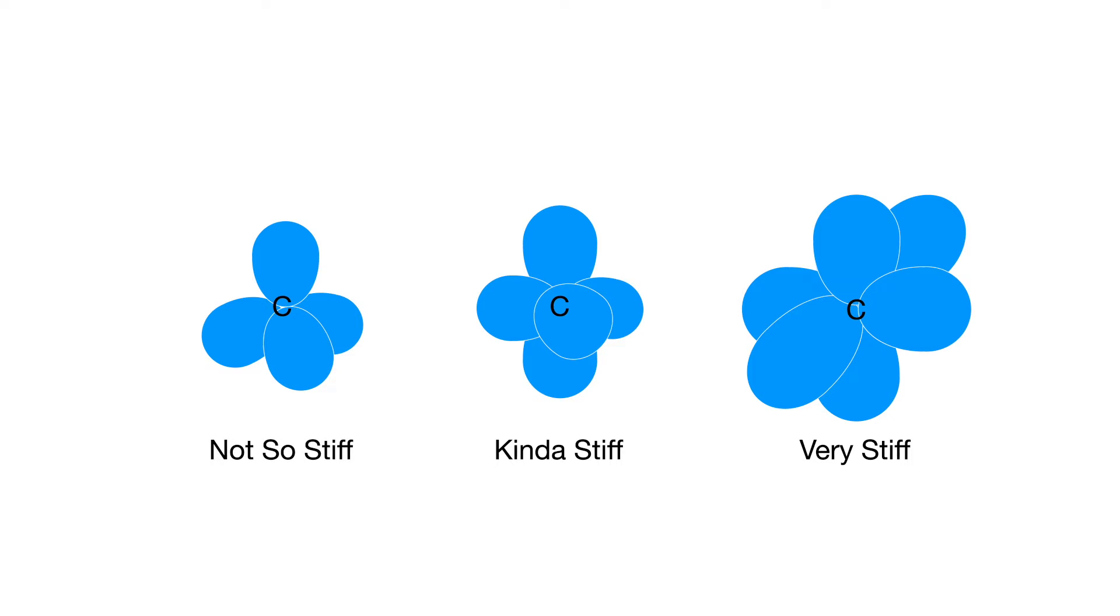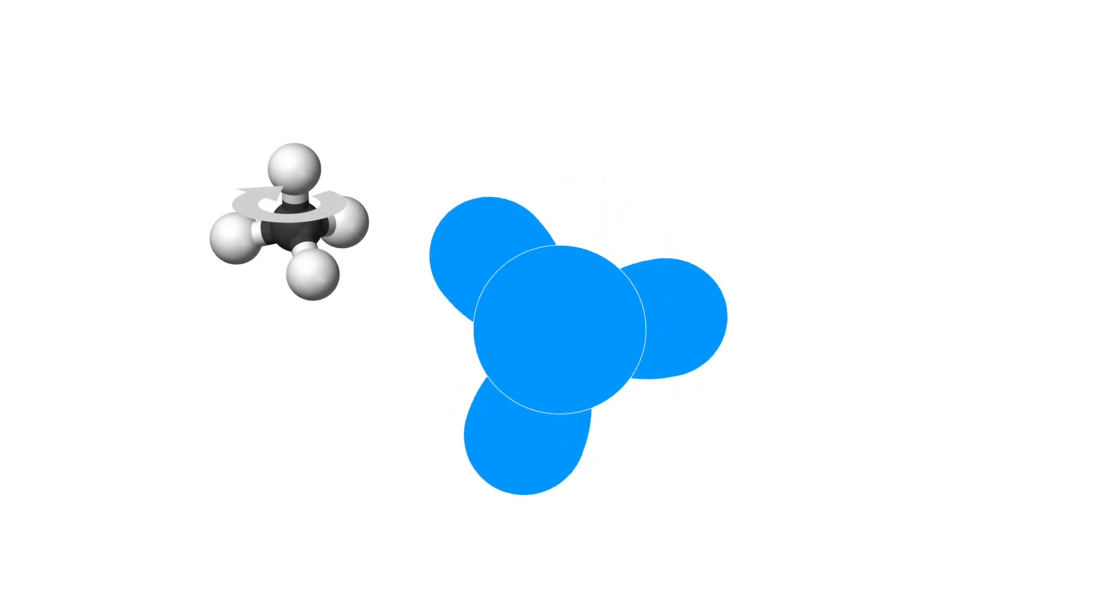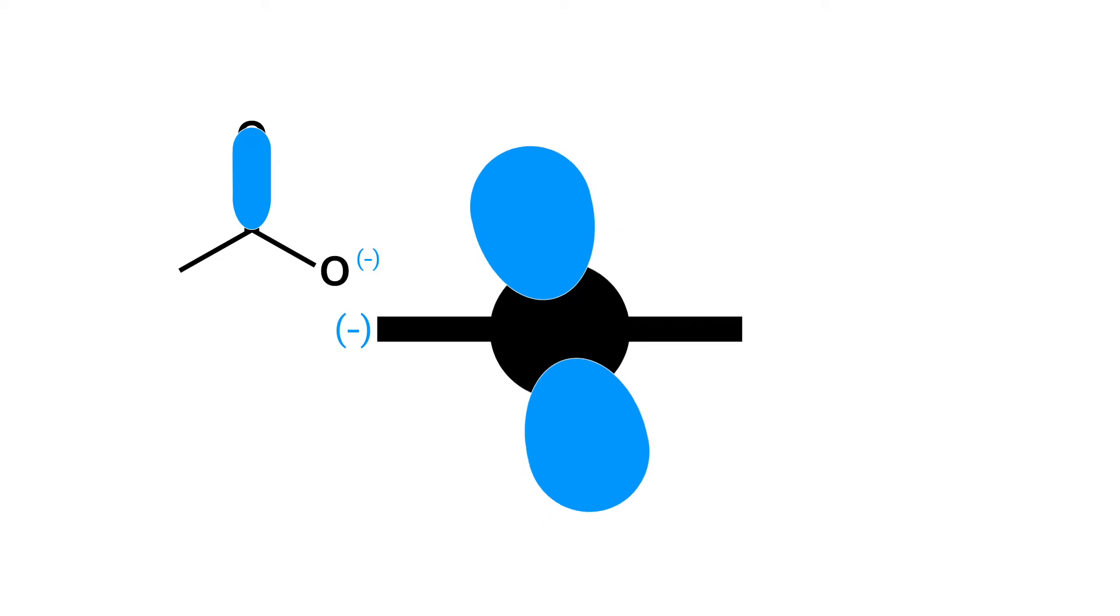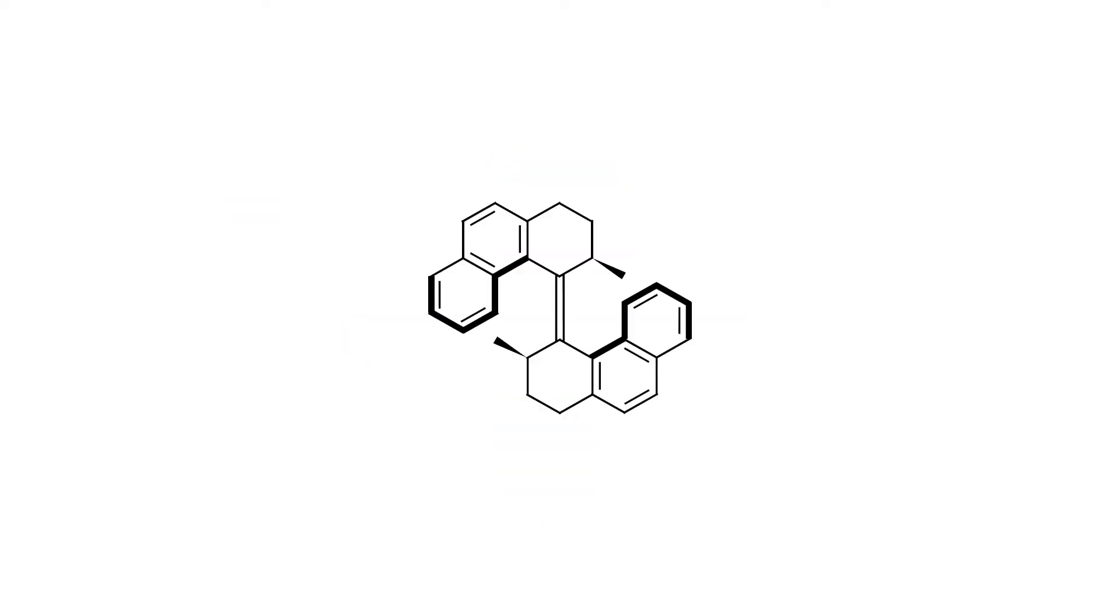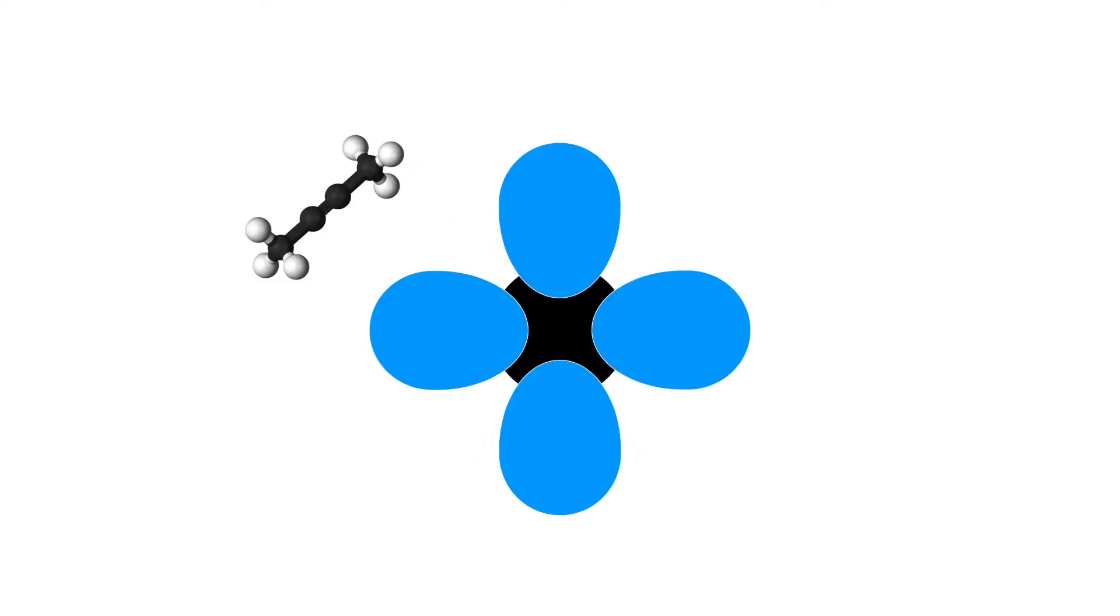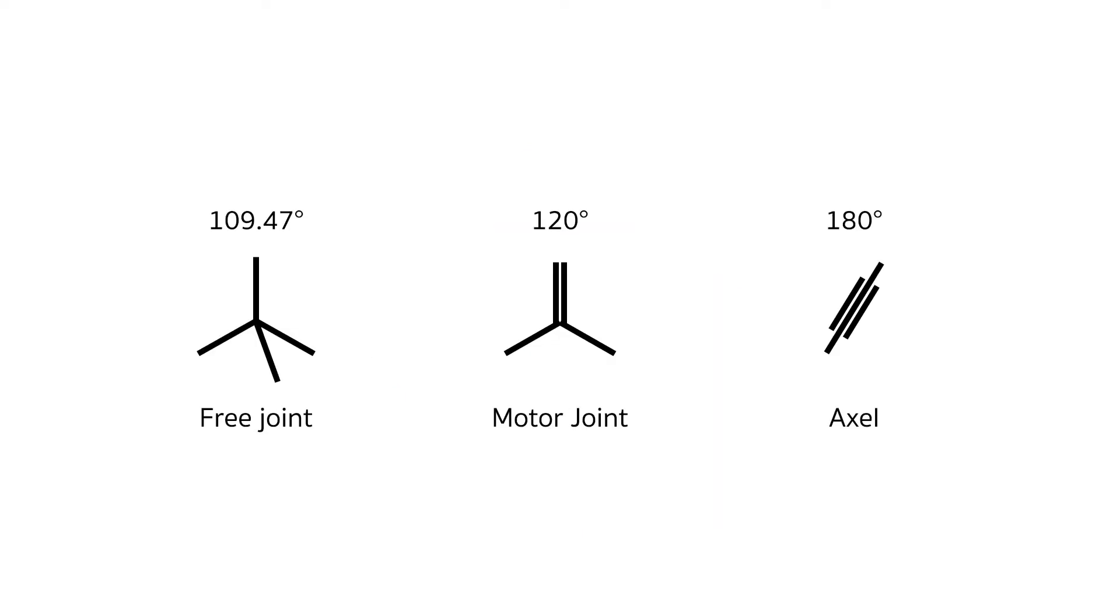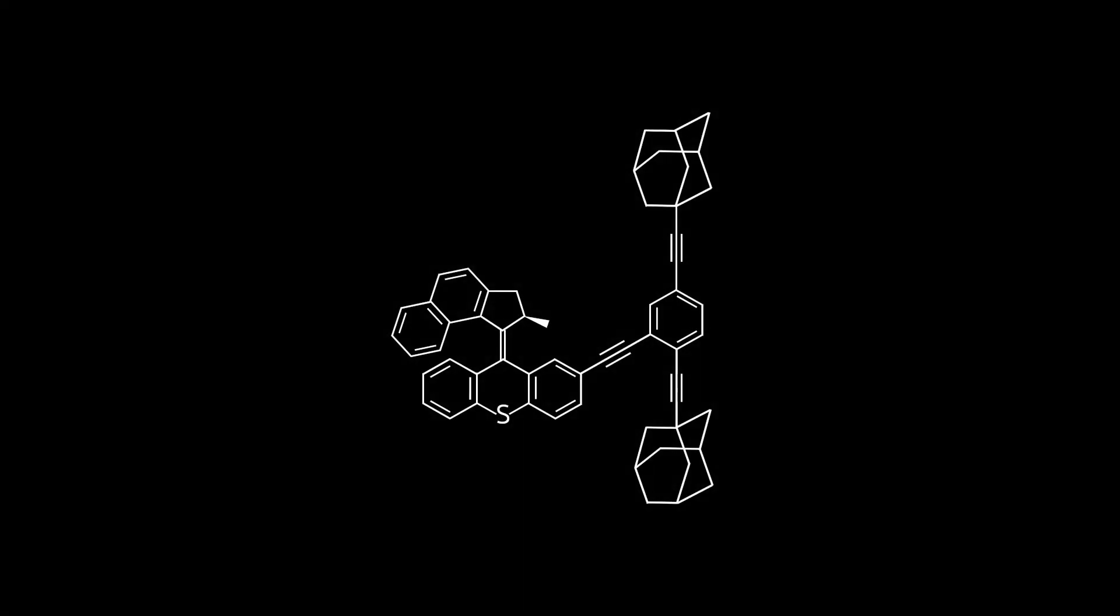sp3 can rotate around itself freely, as if it were a free joint, super similar to wheels on an axle. sp2 isn't as easy to rotate, but it's not impossible. It just takes a little bit of motivation in the form of energy. Which is, fun fact, one of the ways scientists design controllable rotation in nanobots. And sp is pretty much impossible to rotate, so it's very much the axle to your chemical structure.